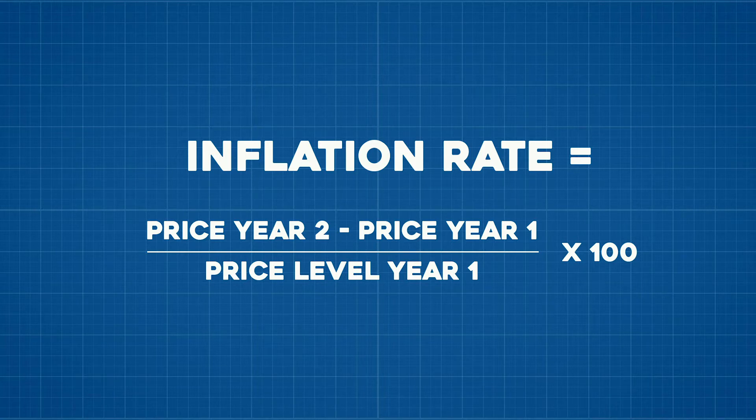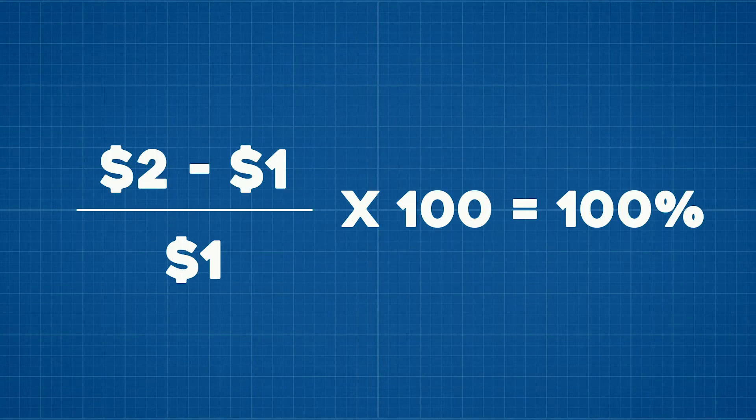If in year two I still make $10,000 — the same as year one — and that Coke goes to $2, then I'm in trouble because my dollar only has half the purchasing power it did in year one. The rate at which prices and income diverge is called the inflation rate, calculated as: (price level in year two minus price level in year one) divided by price level in year one, times 100. In the example, that's ($2 − $1) ÷ $1 × 100 = 100%.